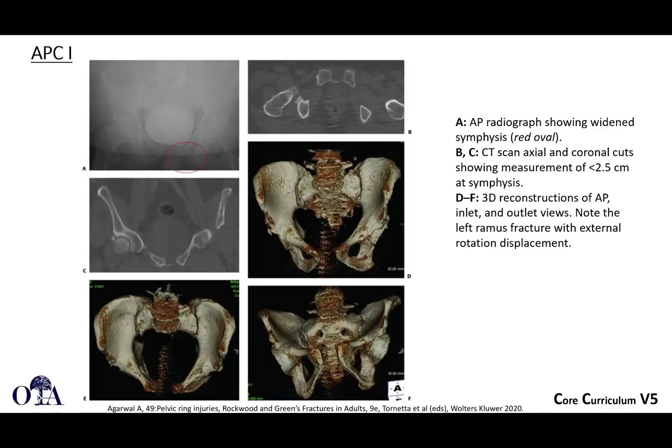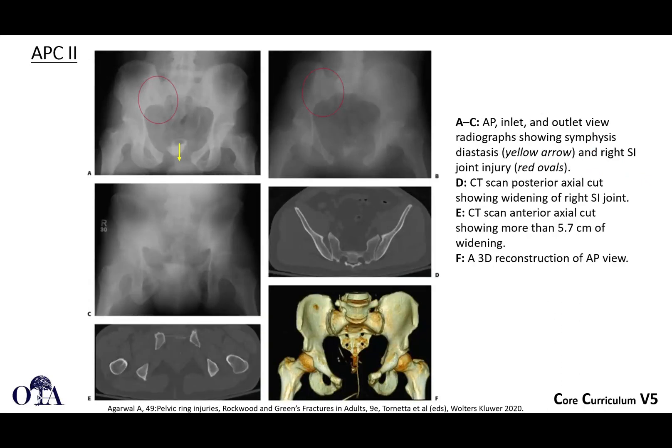APC type 1 demonstrates less than 2.5 cm widening of the pubic symphysis, based on cadaver data. You may not have any fractures — it could be a pubic symphysis disruption with anterior SI ligament injury on the ipsilateral side. In APC2, there is significant widening of the pubic symphysis greater than 2.5 cm with anterior SI widening, but the posterior SI ligaments remain intact, making it rotationally unstable but vertically stable.